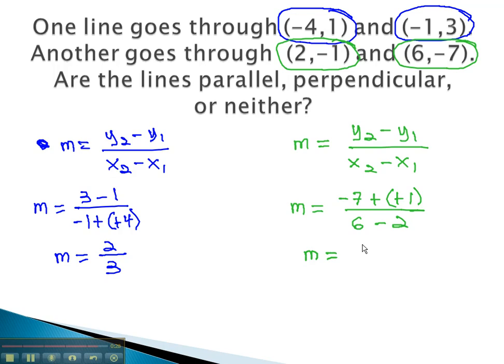Subtracting a negative is like adding a positive, and we get negative 6 fourths, which reduces to negative 2 thirds. I'm sorry, negative 3 halves, if I reduce right, dividing by 2.